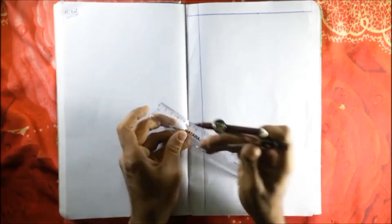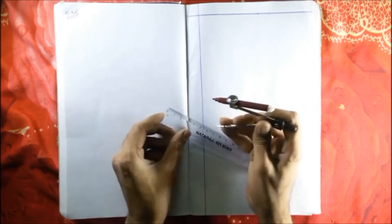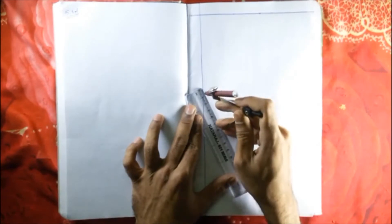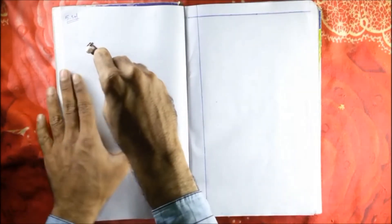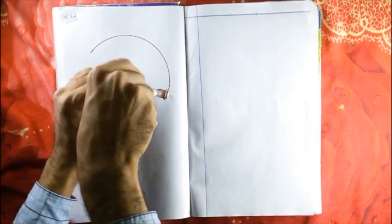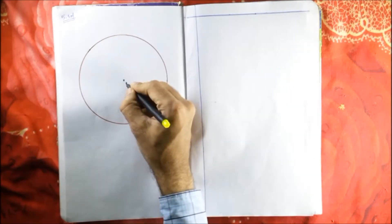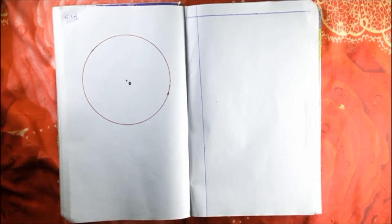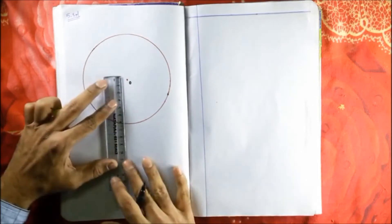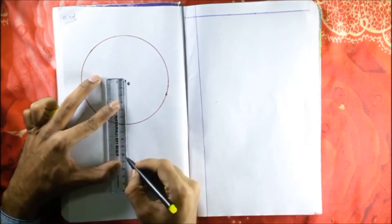So let us start. First, we draw a circle with radius 6 centimeters — this is our radius. The center is O. Next, we draw a point outside the circle which is 10 centimeters away from this center, and we call it P.